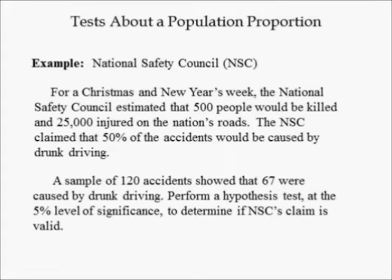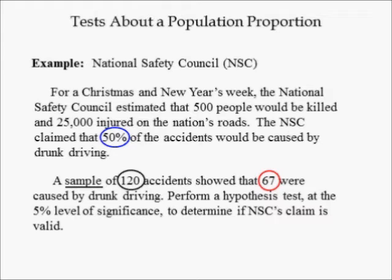In the following example, we look at the National Safety Council (NSC). For Christmas and New Year's week, the NSC estimated that 500 people would be killed and 25,000 injured on the nation's roads. The NSC claimed that 50% of the accidents would be caused by drunk driving. A sample of 120 accidents showed that 67 were caused by drunk driving. Perform a hypothesis test at the 5% level of significance to determine if the NSC's claim is valid.